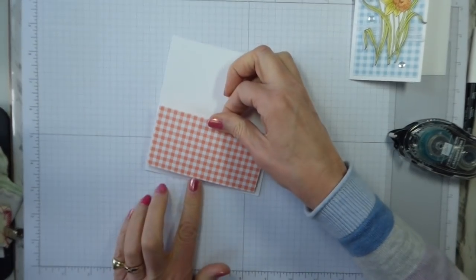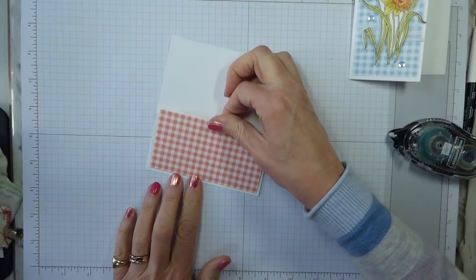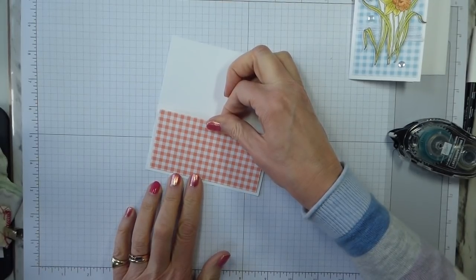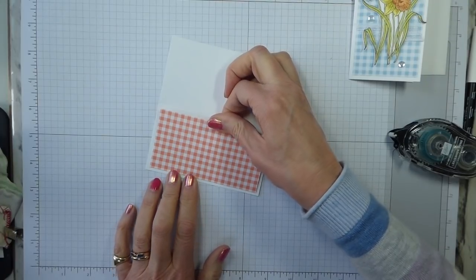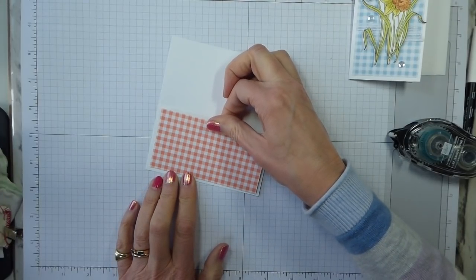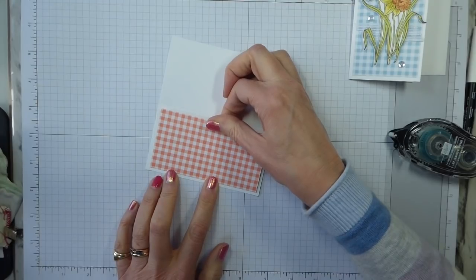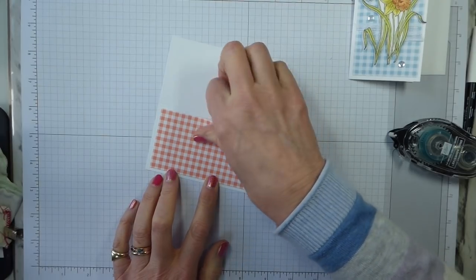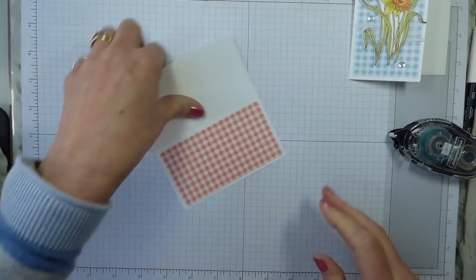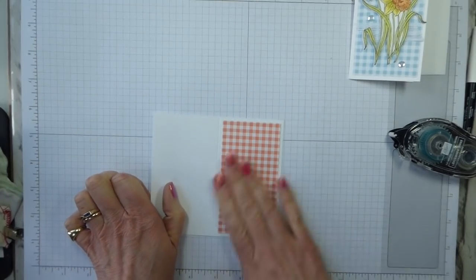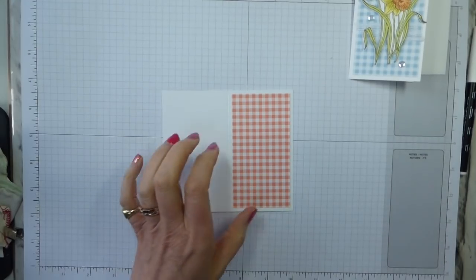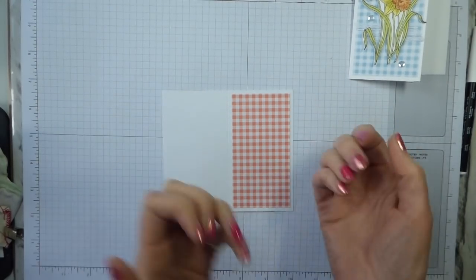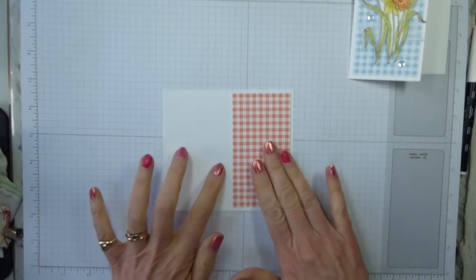So let's pop that on. Now I like to do this sort of in a funny cack handed way, but it just means that I can then visualize where everything is just a bit better. There we go. So that is nicely on. And I do all of this with the card flat because I just find it easier to do it with the card flat and then fold it.